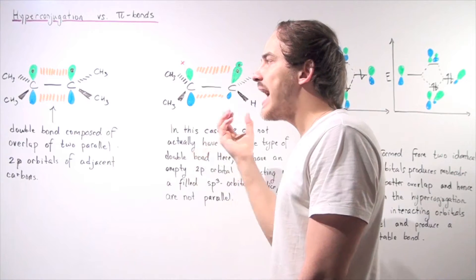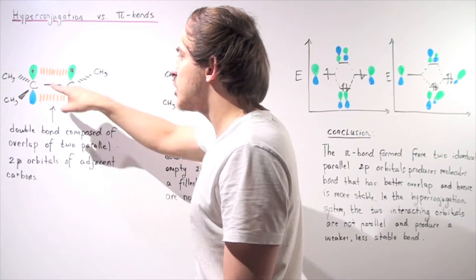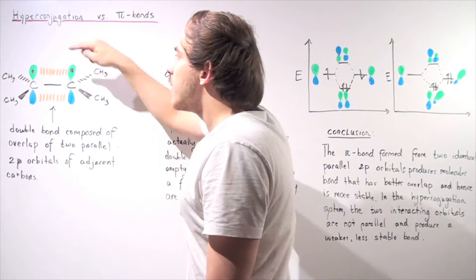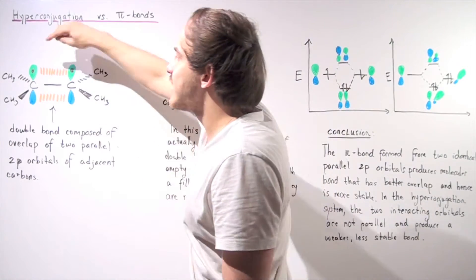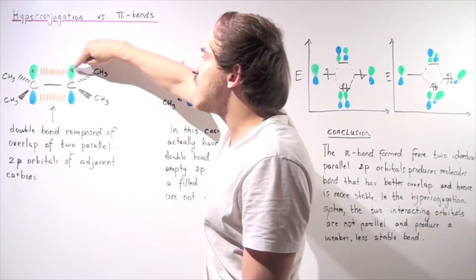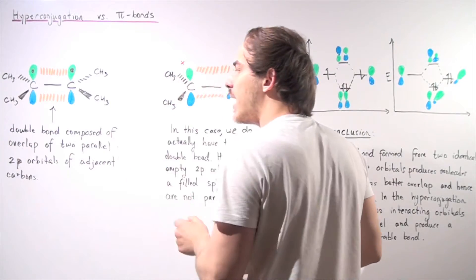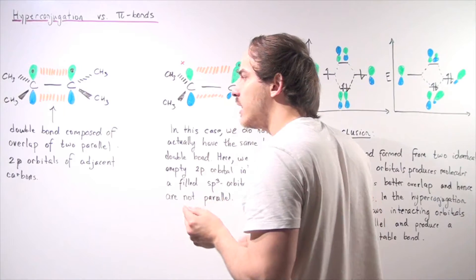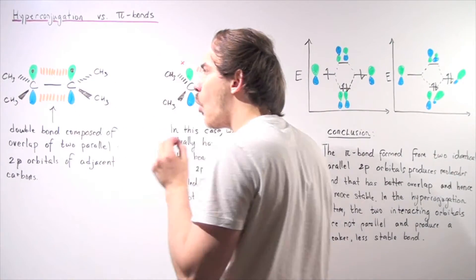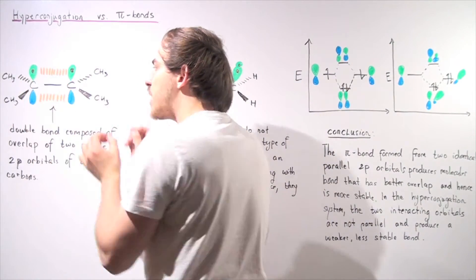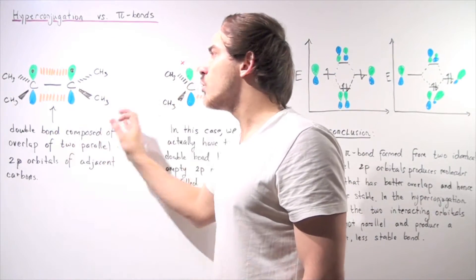In this system, we have our double bond known as the pi bond. In our double bond, we have a sigma bond between carbon and carbon, and we have the pi bond formed by an overlap of two p orbitals. We have a 2p orbital on each carbon, there's an overlap, and we form our pi bond. The double bond is composed of the overlap of two parallel 2p orbitals of adjacent carbons. Because we have two identical 2p orbitals that are both parallel, we're going to have very good overlap, and therefore a relatively strong bond.